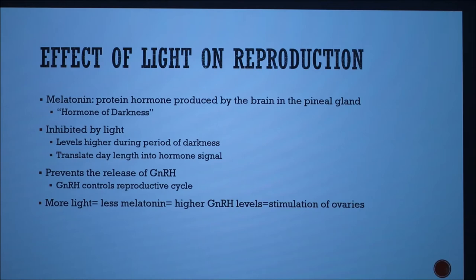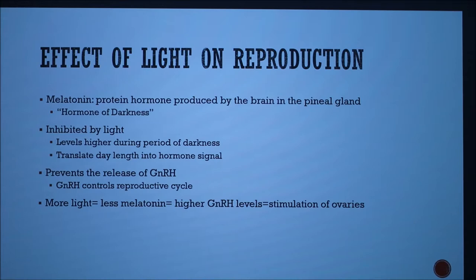So how does light affect reproduction? Melatonin is a protein hormone produced by the brain and the pineal gland, and it is frequently called the hormone of darkness. Melatonin is inhibited by light, so levels are higher during periods of darkness. Therefore, day length is translated into a hormone signal. Melatonin prevents the release of GnRH (gonadotropin-releasing hormone), which controls the reproductive cycle. In essence, more light equals less melatonin and higher GnRH levels, which stimulates the ovaries.